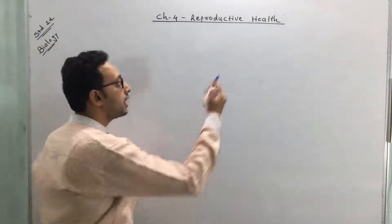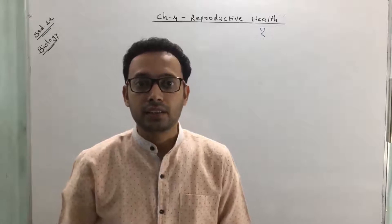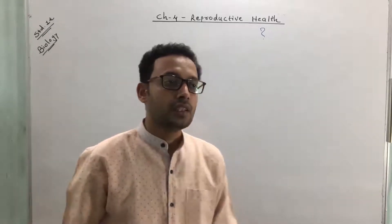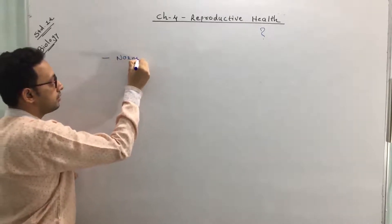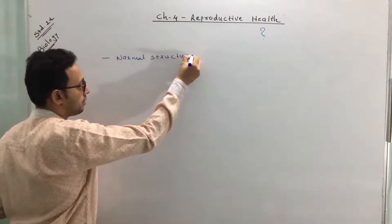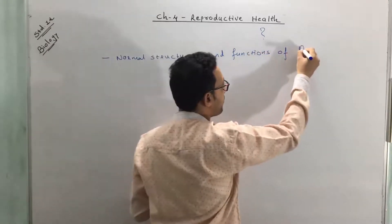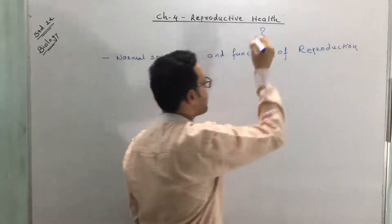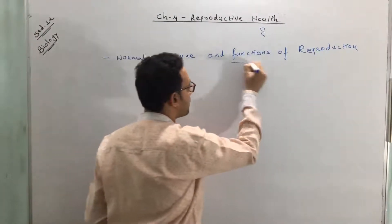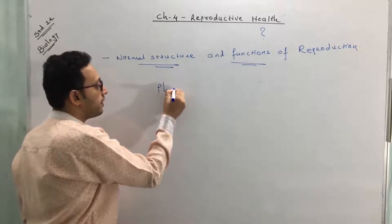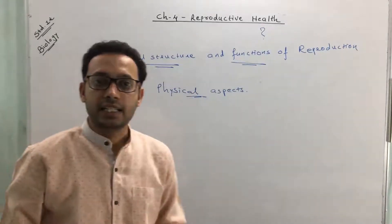So what does healthy mean? To whom will you call healthy and to whom unhealthy? Reproductive health in general terms can be defined as the normal structure and functions of reproduction. However, this definition includes only one aspect of the reproductive system, and that is the physical aspect. Other aspects are not considered in this definition.